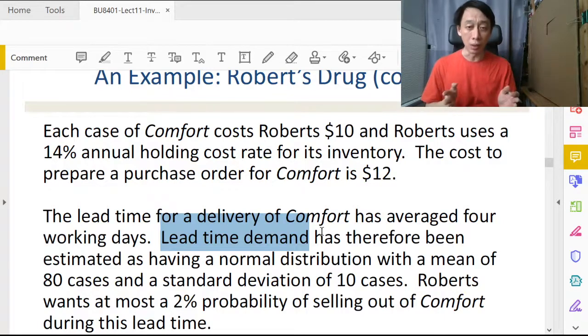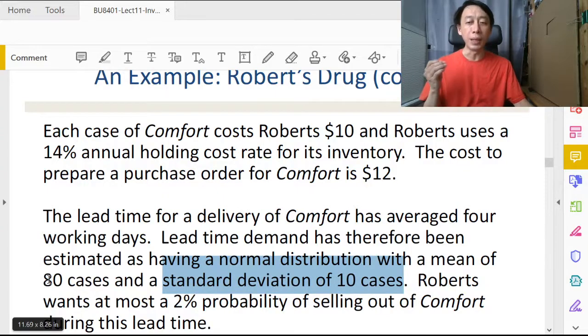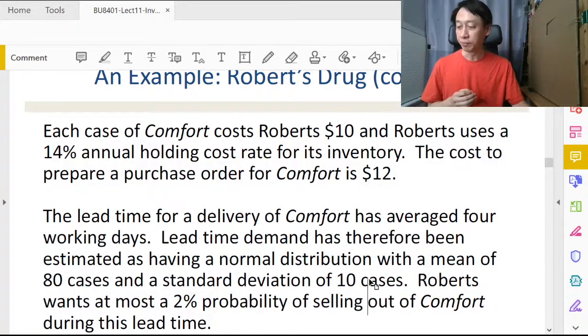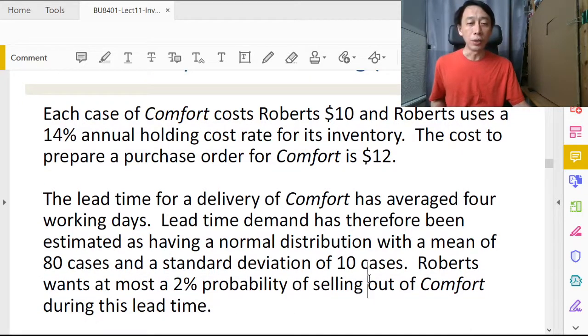Because it's not constant and it doesn't follow any formula, but we know the statistical behavior and it is told to us here that it has a normal distribution with a mean of 80 and a standard deviation of 10. Robert wants at most a 2% probability of selling out, that means probability of stockout is 2% during this lead time period.